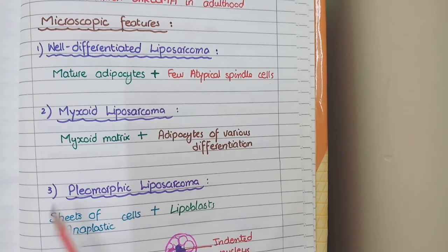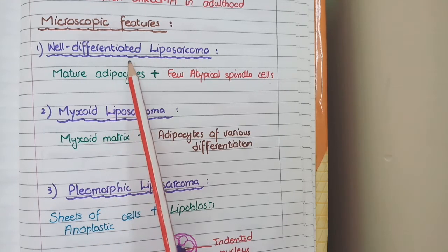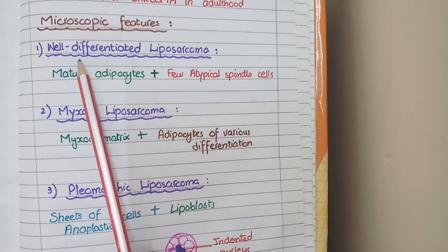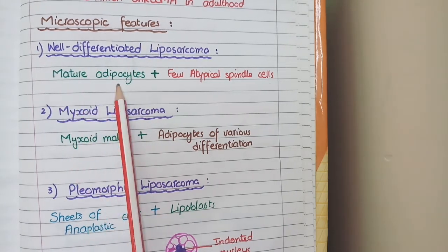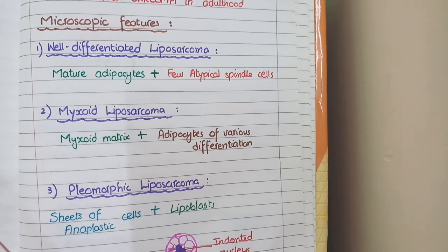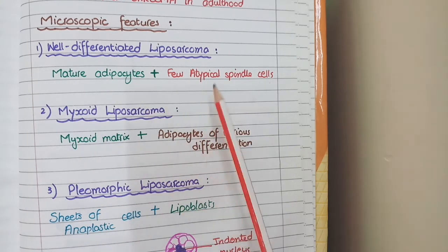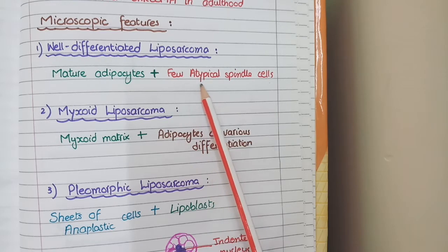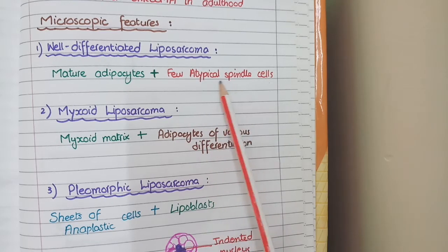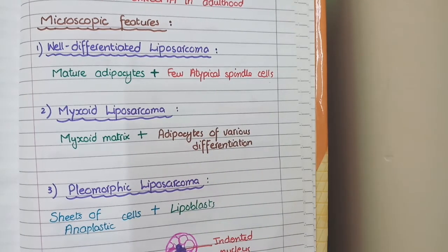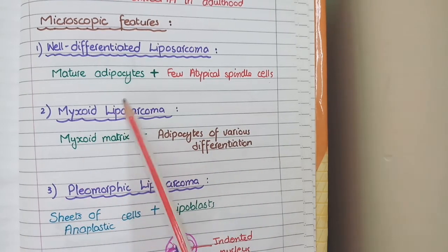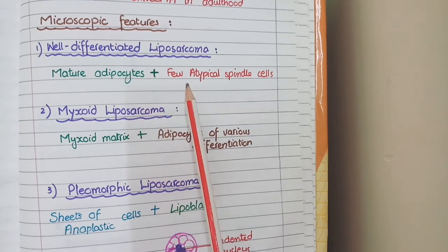In well-differentiated liposarcomas, as the name implies, you will see well-differentiated or mature adipocytes, similar to those studied in lipomas. But in addition to these mature adipocytes, there is a very small quantity of few atypical spindle cells. So in well-differentiated liposarcomas, you see mature adipocytes in abundance and few atypical spindle cells.